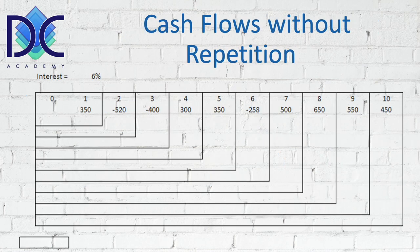Let's look at some examples. We have here a set of cash flows from the start till the end — period 10. We see that in period one we have a positive cash flow of 350 dollars, with an interest rate of six percent like we used before. In period two and three we have negative cash flows.